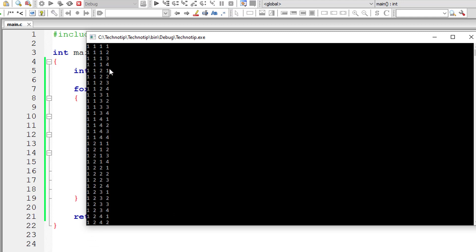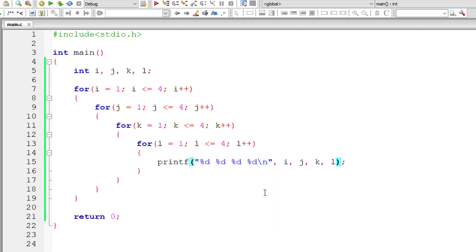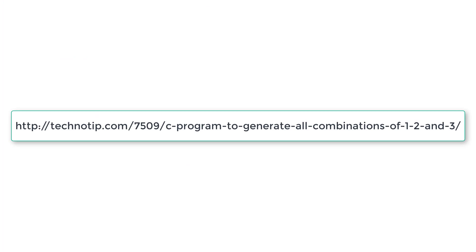Similarly, if you want combinations of 1, 2, 3, 4 and 5, add another for loop and display the result inside the fifth for loop. This is how we make use of nested for loops to print all the combinations of numbers 1, 2 and 3.